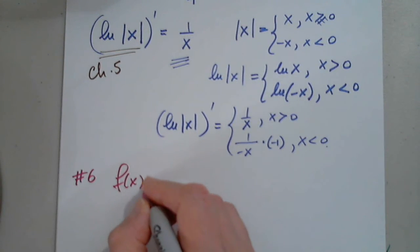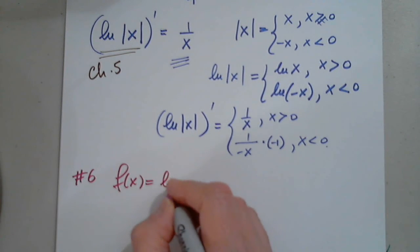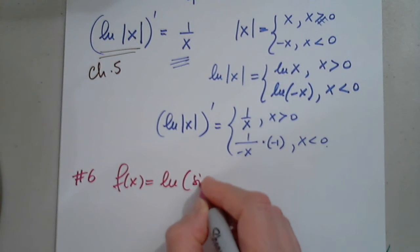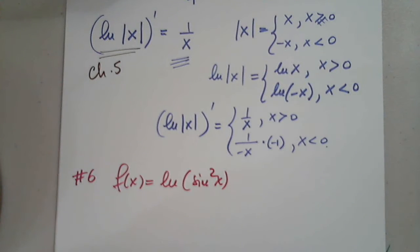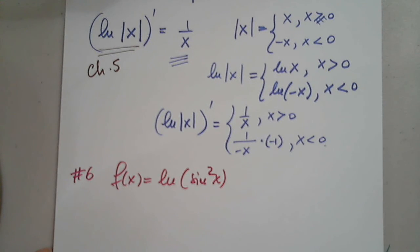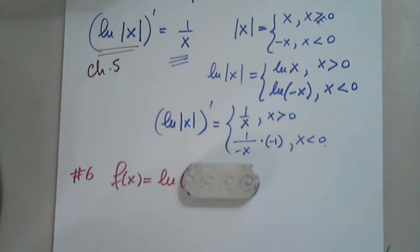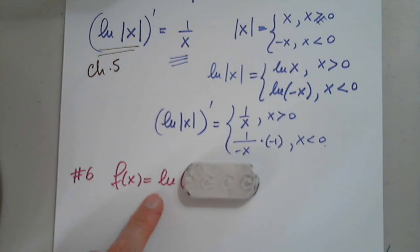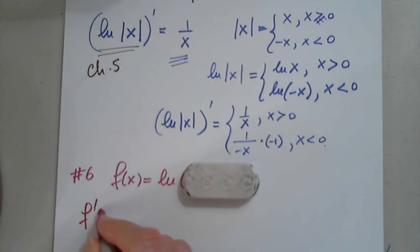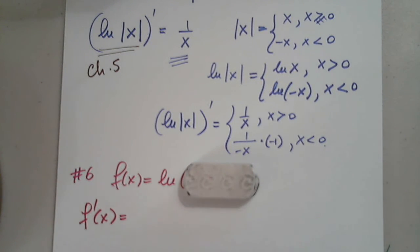Very good point. f of x equals natural log of sine squared x. So I have a function that is a natural log of another function, and I want to differentiate this. How do I do it?